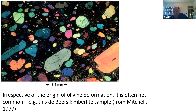If you look at some kimberlites — such as the De Beers kimberlite — the majority of olivines actually lack undulose extinction. So it's not always common.